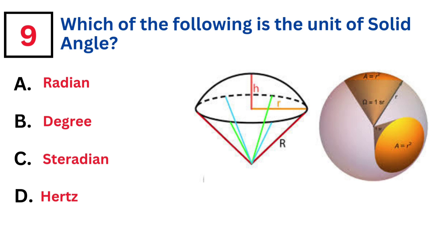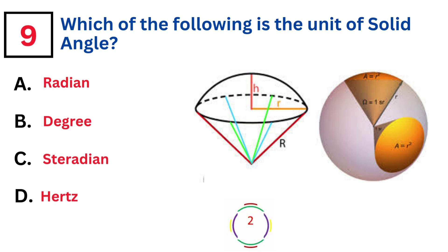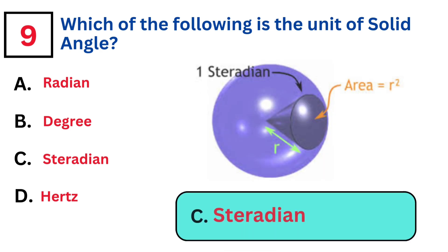Which of the following is the unit of solid angle? Answer C. Steradian.